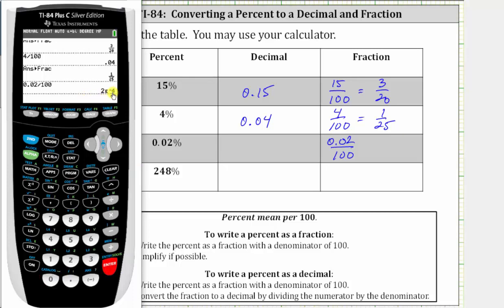And notice how here we have 2e negative 4. This is scientific notation, which means 2 times 10 to the power of negative 4. Let's go ahead and write that down.